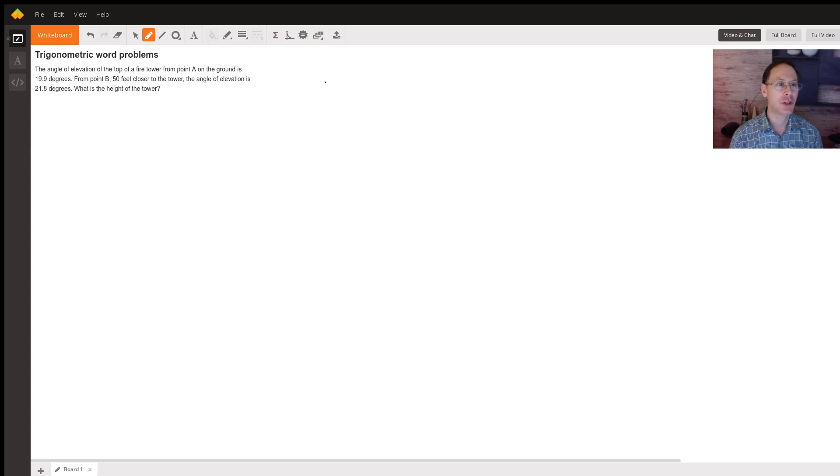The angle of elevation of the top of a fire tower from a point A on the ground is 19.9 degrees, and from a point B that's a little closer to the tower, the angle of elevation is 21.8 degrees. Then it asks, what is the height of the tower?